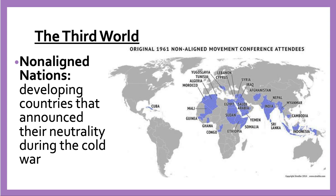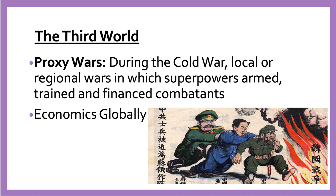It was a way for these developing nations to take advantage of the system. It's also a way to keep these mega superpowers out of their country, to keep them from meddling in their politics. Many of these regions had only recently become independent and did not want to continue having foreign intervention in their politics. We also see during the 20th century a lot of proxy wars — local or regional wars in which superpowers armed, trained, and financed combatants.